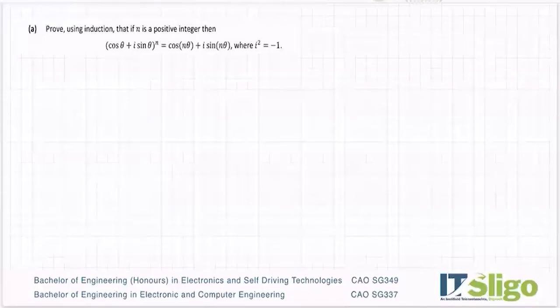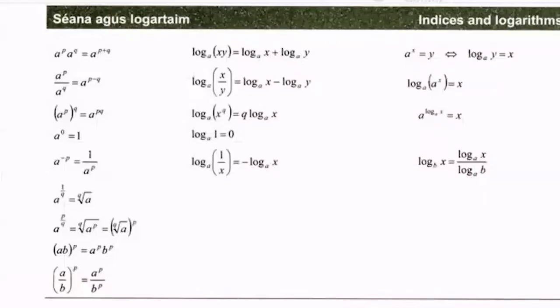The last proof by induction that I'm going to do in this set is: prove using induction that if n is a positive integer, then (cos θ + i sin θ)^n = cos(nθ) + i sin(nθ), where i² = -1. So basically what you are proving is De Moivre's theorem.